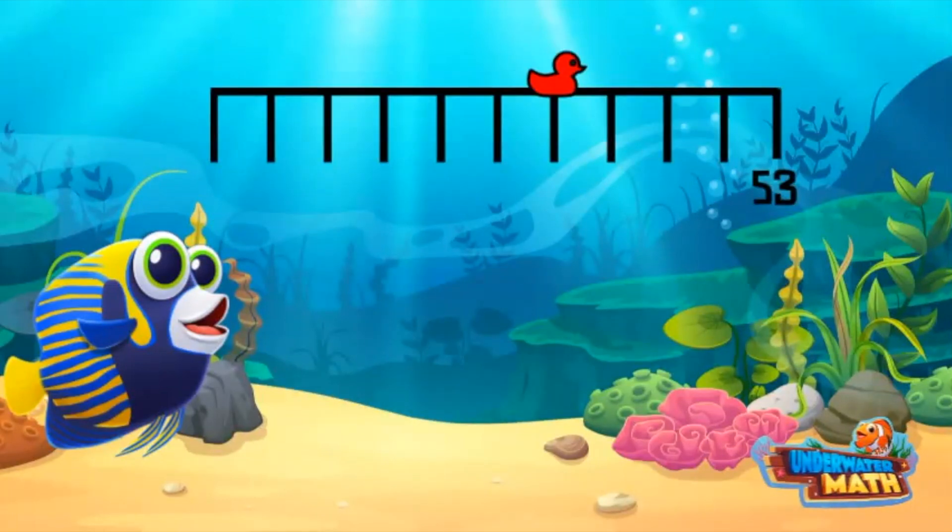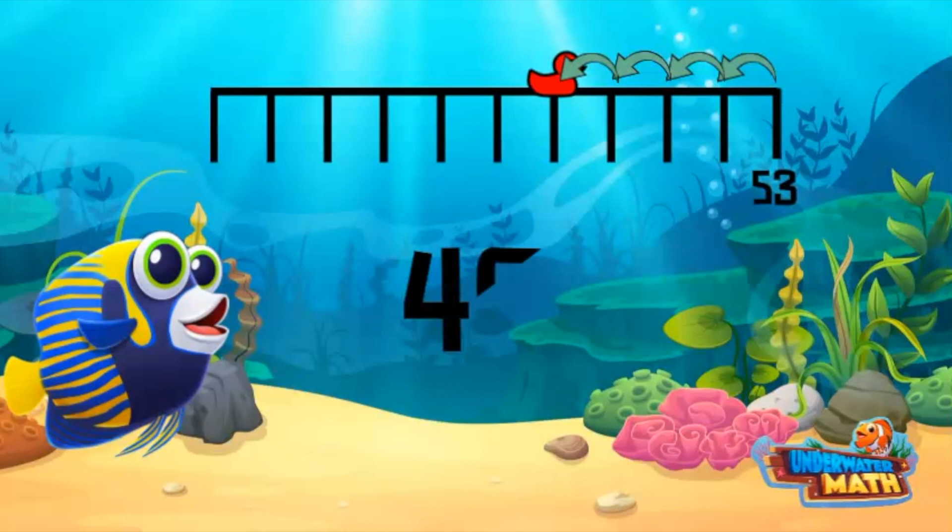Let's end with a tricky one. We need to find the location of the red duck. We start at 53 and count back until we reach the red duck. 52, 51, 50, 49. The red duck is located at 49.